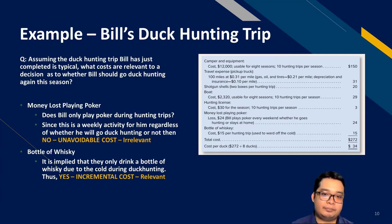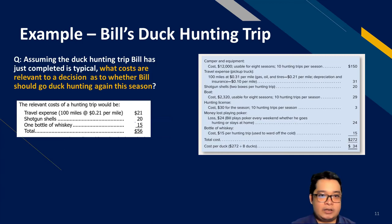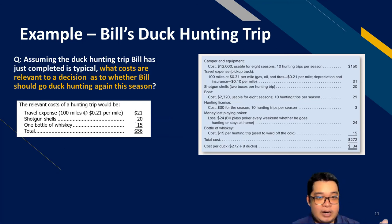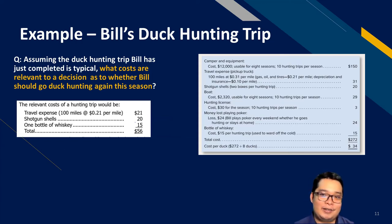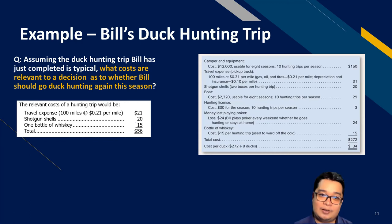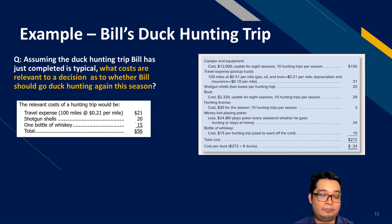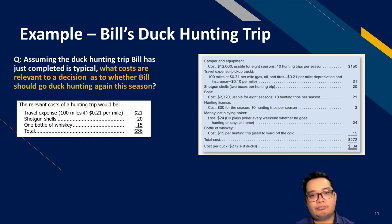To summarize, the relevant costs for one trip are: gas, oil, and tires ($21), shotgun shells, and one bottle of whiskey. The total relevant cost for one trip is $56. The rest are sunk costs or unavoidable costs. This is a simplistic analysis, but it gives an overview of how to evaluate relevant and irrelevant costs.